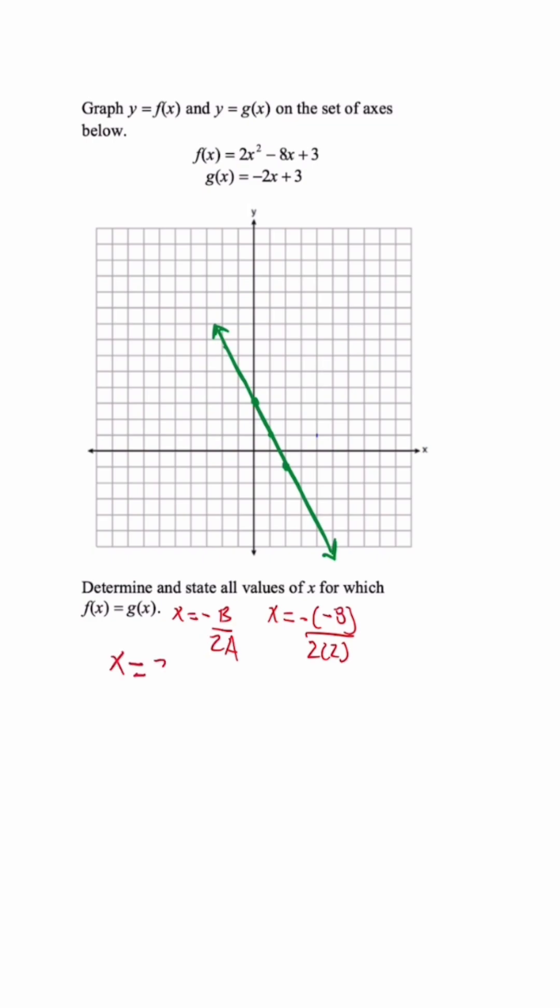So we're going to get x is equal to 8 over 4 which is 2. Then once we plug this back in we're going to get y is equal to 2 times 2 squared minus 8 times 2 plus 3. So when we simplify this, 8 minus 16 plus 3, we're going to get y is equal to negative 5. So the vertex for the parabola is going to be at 2 negative 5.